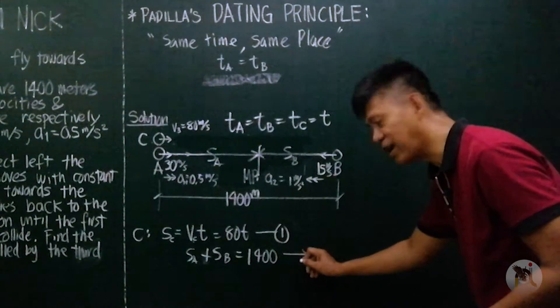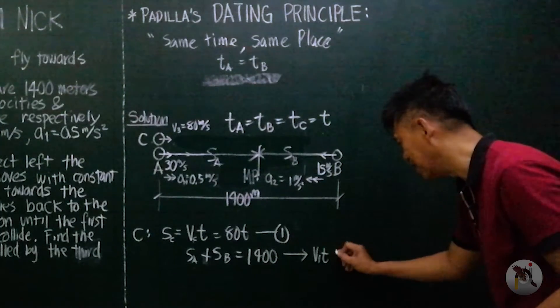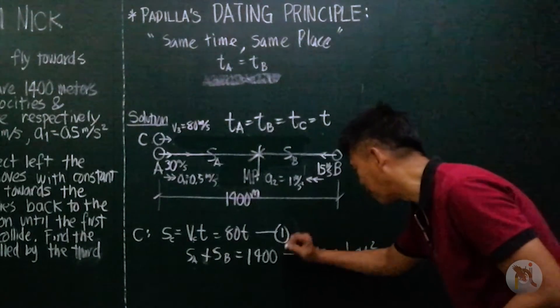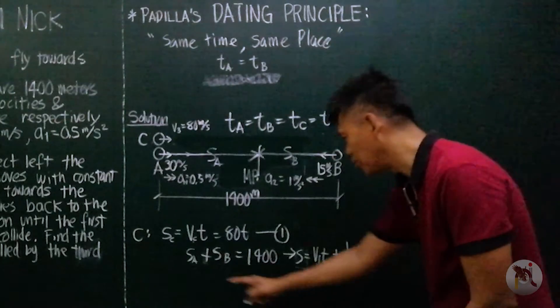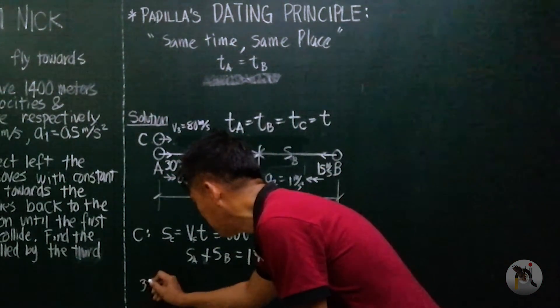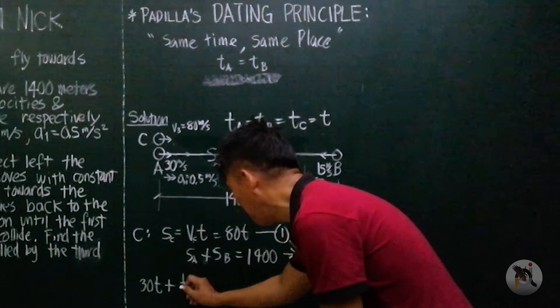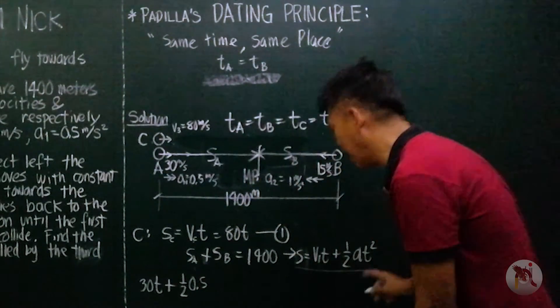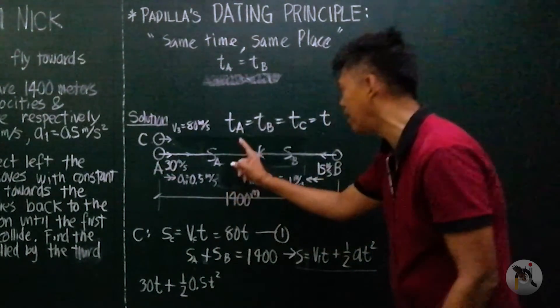But we know that our formula for S with velocity is V_1 T plus 1/2 A T squared. This is our formula for S. So applying this to this and this, for S_A, the initial velocity is 30 times T, V_1 T plus 1/2 acceleration is 0.5 times T squared must be equal to 1400. The time for A and the time for B are the same.